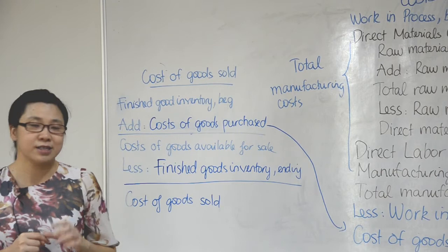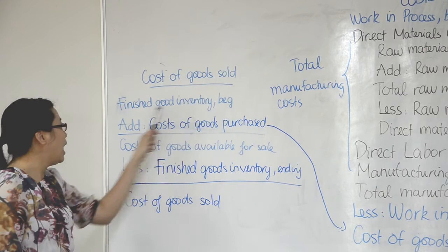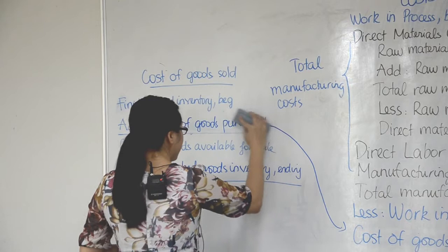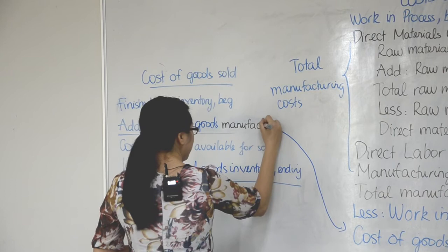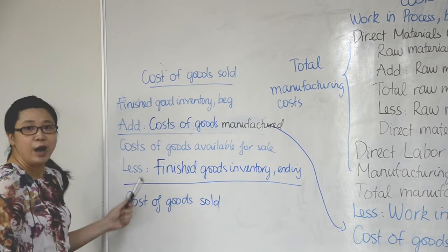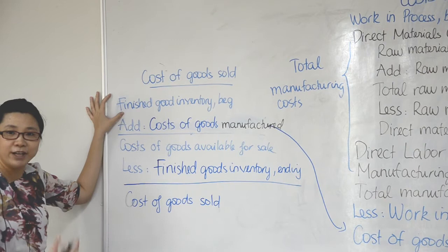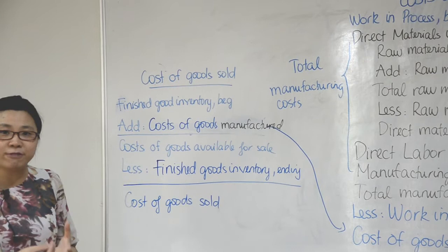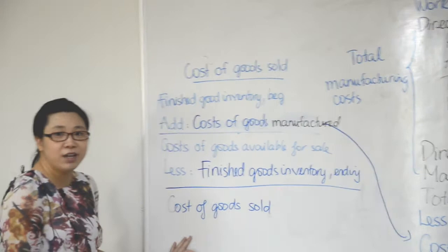To find the cost of goods sold for a manufacturing company, we take finished goods inventory at the beginning plus cost of goods manufactured — so we change from cost of goods purchased to cost of goods manufactured. That gives us cost of goods available for sale. Then we minus finished goods inventory at the end, and that gives us cost of goods sold.